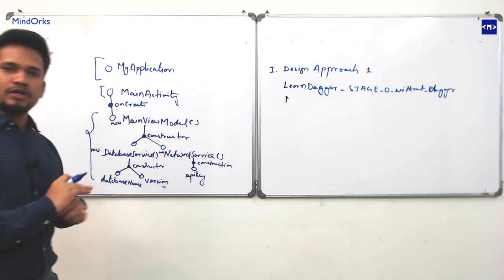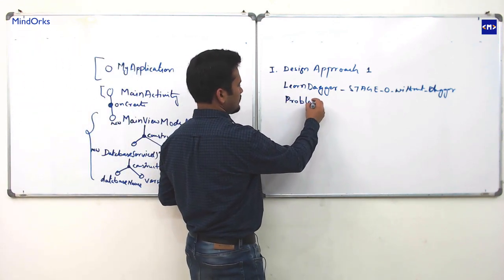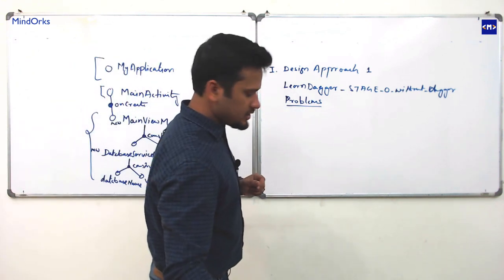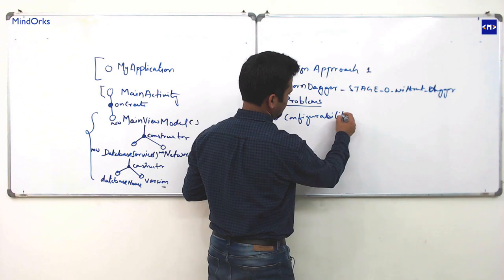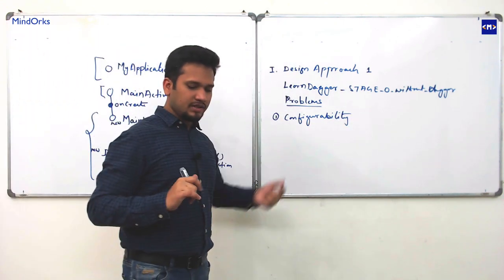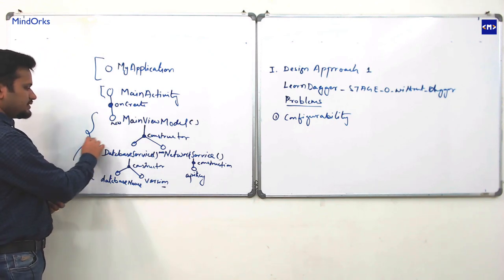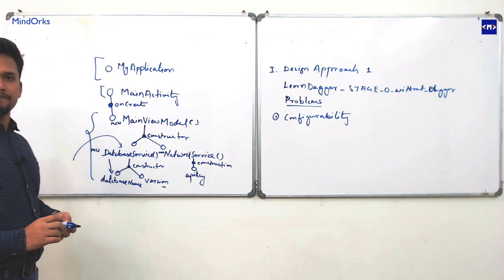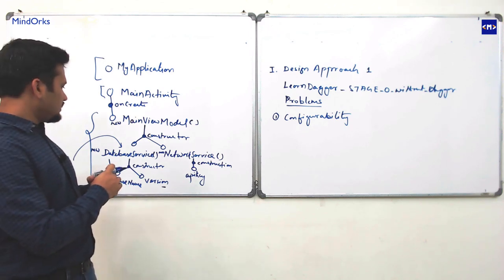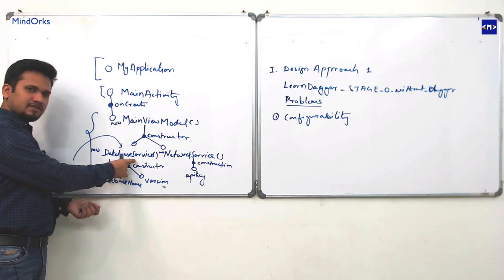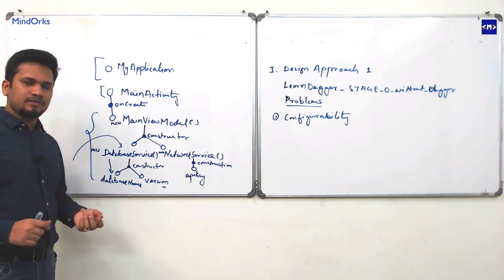This design will work — your application will run fine. But there are problems. The first problem is configurability. If you need to change the database name, you have to go into the DatabaseService class and change the code. Any change requires physically going into the class. Database name hardcoded in the DatabaseService constructor makes it less configurable — you cannot change it from outside.